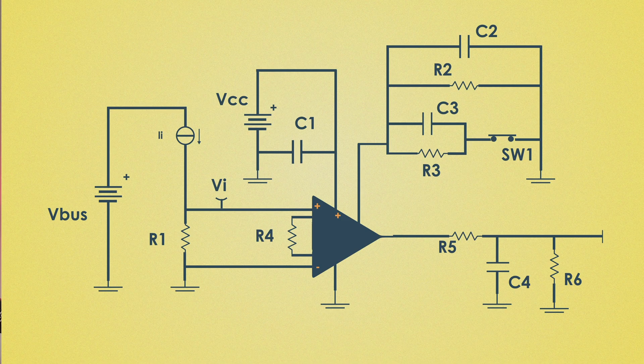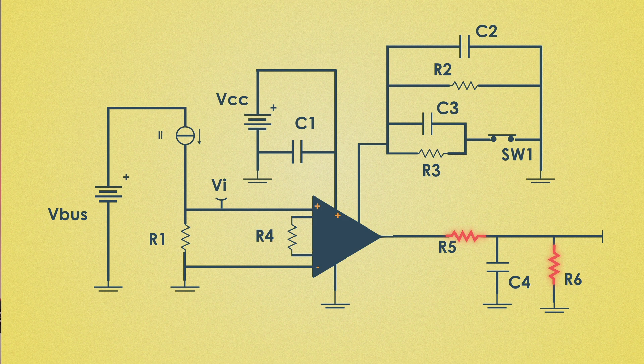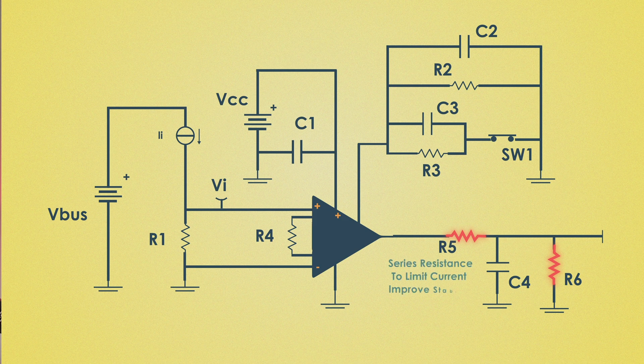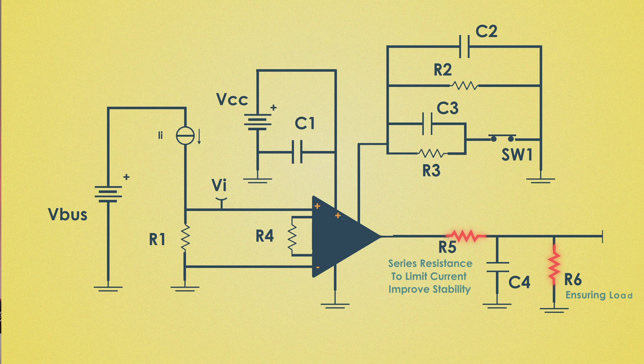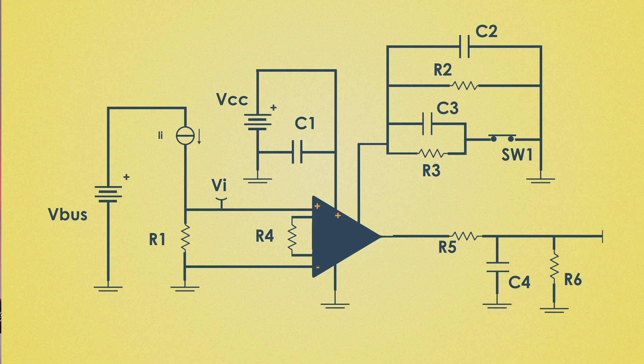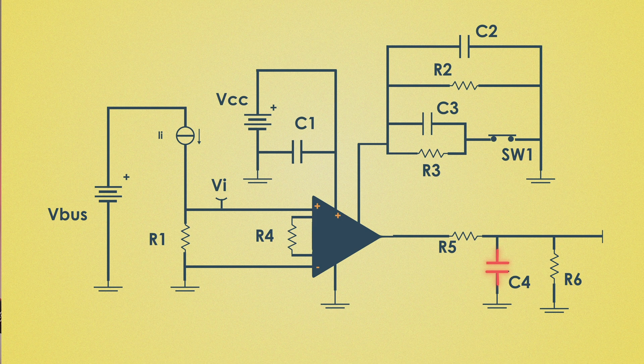And we have output resistors R5 and R6, where R5 provides a series resistance at the output to limit current and improve stability. R6 forms part of the output impedance network, ensuring proper load for the next stage like an ADC. The capacitor C4 filters out high frequency noise from the output signal. Together with R5, it forms a low pass filter.